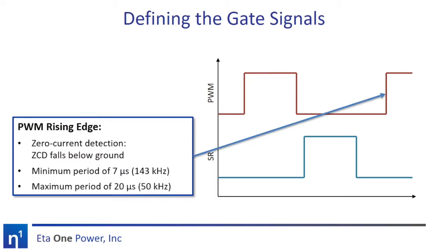Finally, let's define the turn-on edge of the primary switch. We'll need to connect a zero-current detection signal to the PWM. When that signal falls below ground, we know that we're at a valley. Thus, we'll configure the transistor to turn on when the ZCD signal falls below ground. To limit the switching frequency of the converter, we'll set a minimum period of 7 microseconds, or a maximum frequency of 143 kHz, and a maximum period of 20 microseconds, for a minimum frequency of 50 kHz.